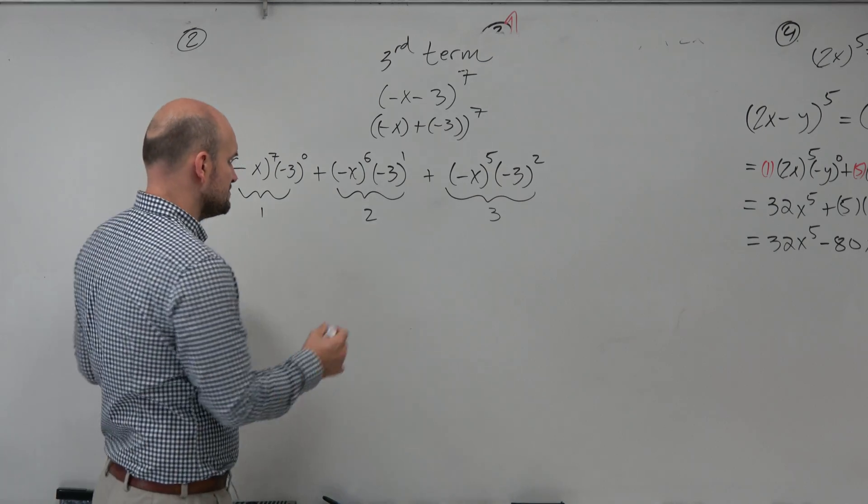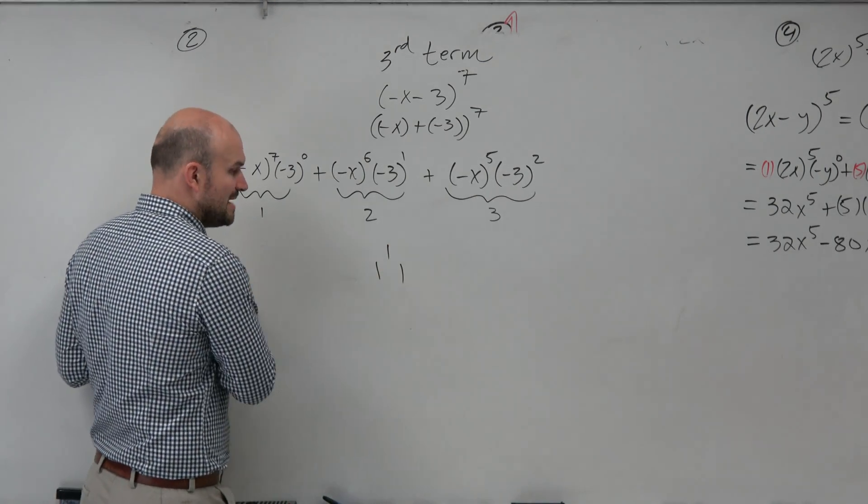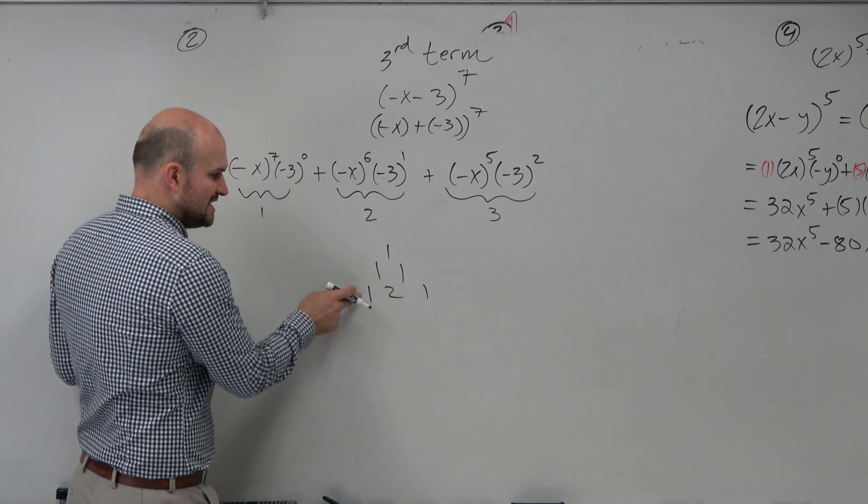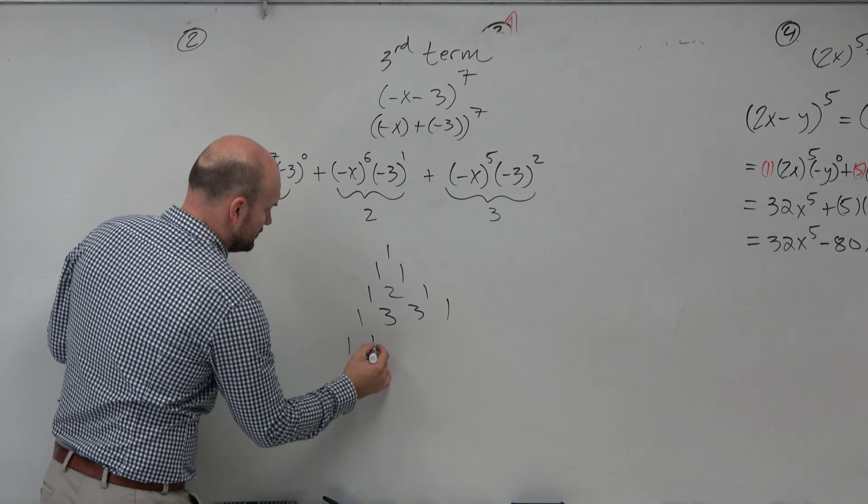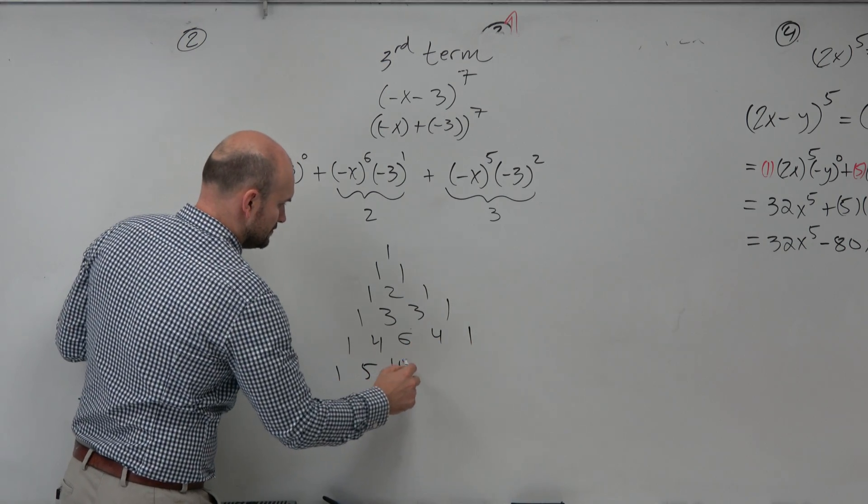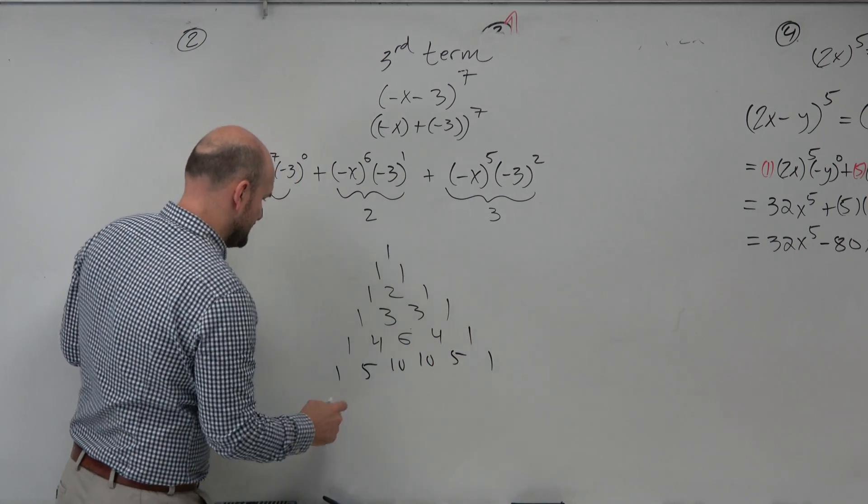So let's find the coefficients. So we go ahead and create our Pascal's triangle. We know that's for the second row. Third row, fourth row, fifth row.